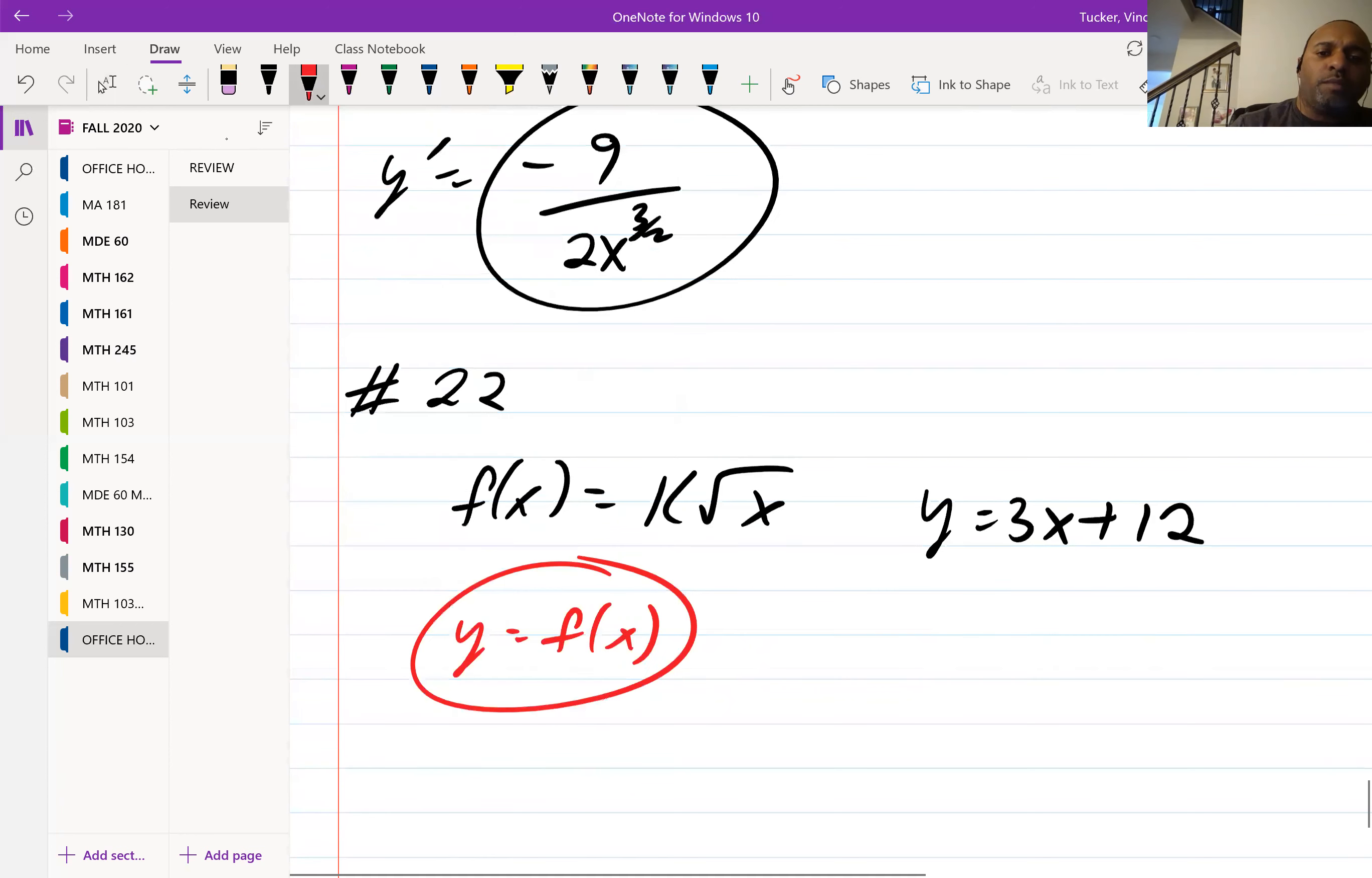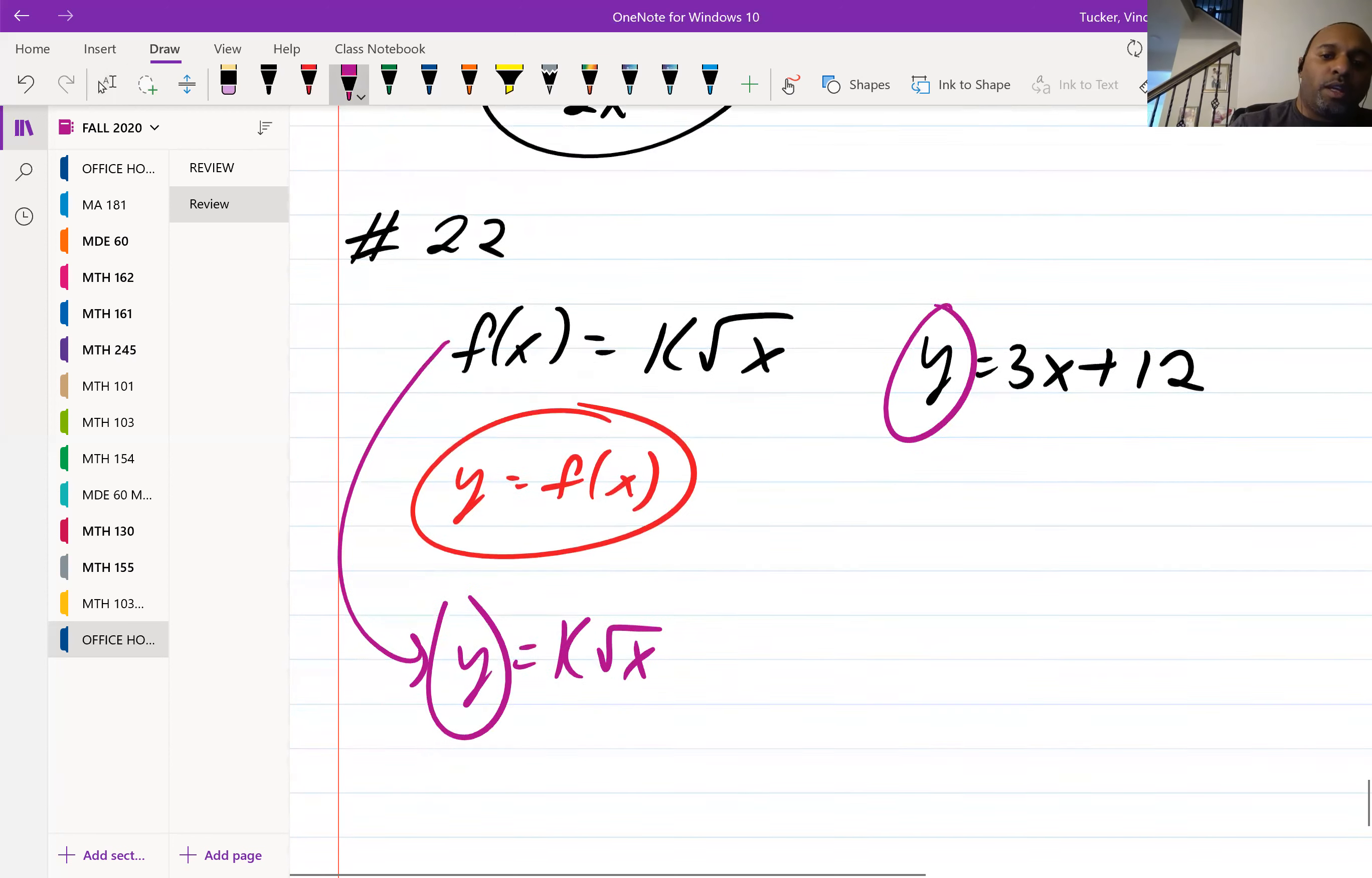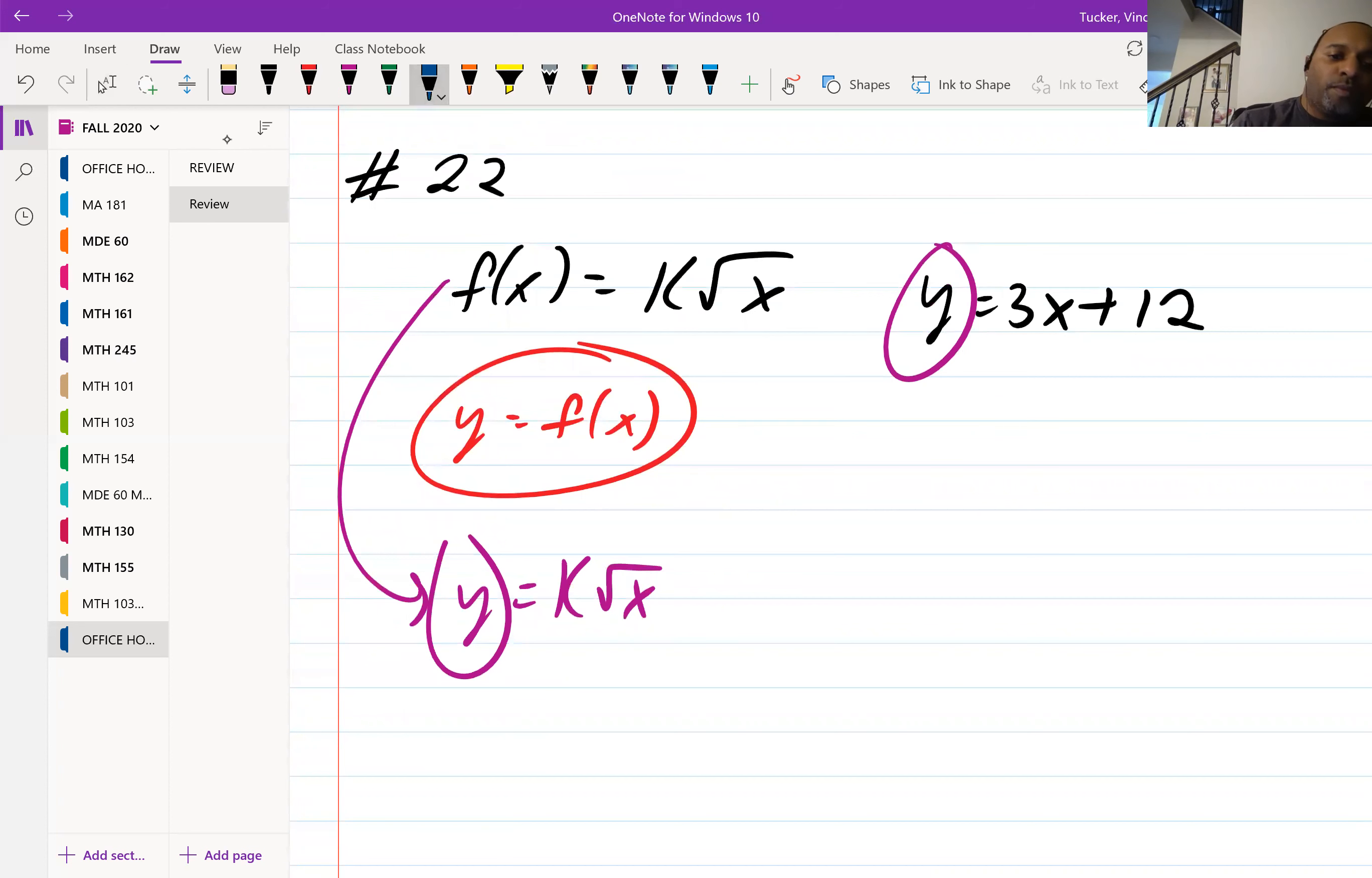So those two are the same. So I can rewrite this problem as y equal to k square root of x. So if that's the case, then that means y is equal to 3x plus 12, and y is equal to k square root of x. That means that they're equal to each other.